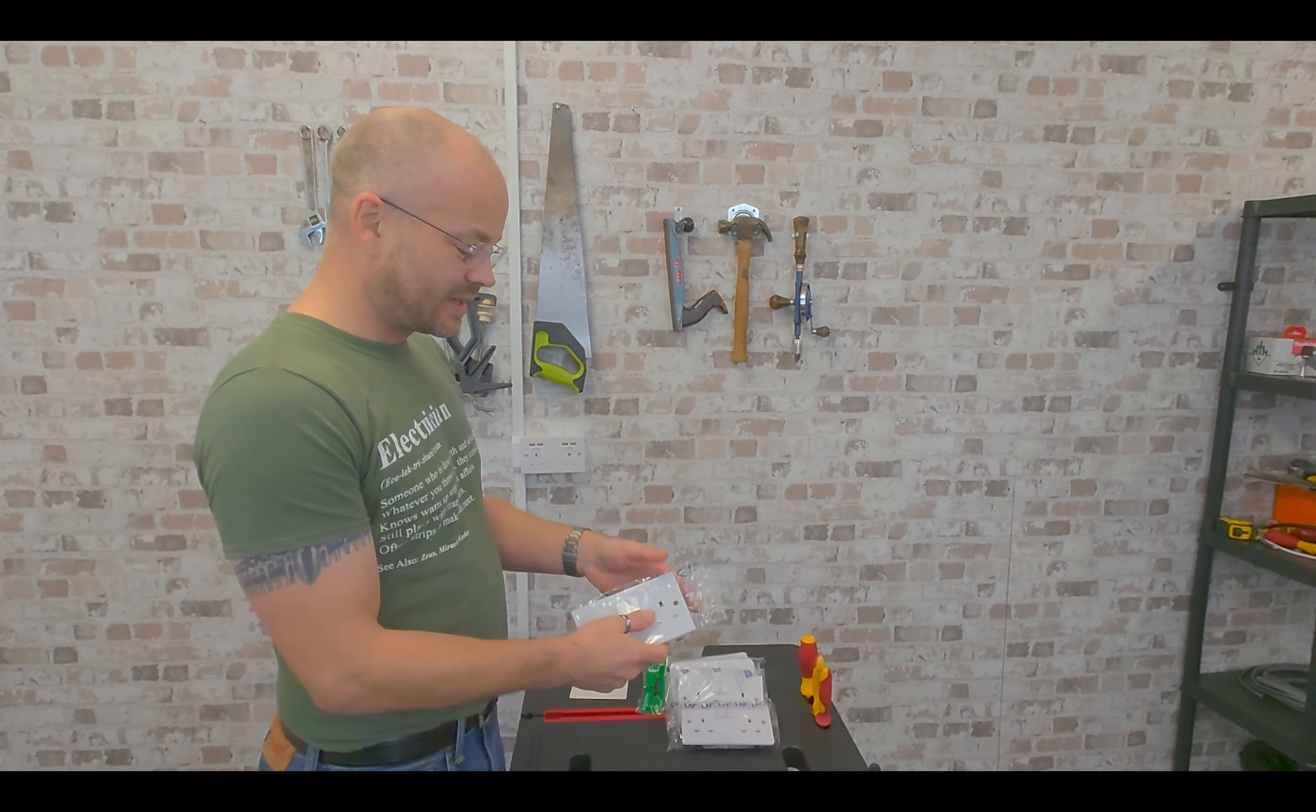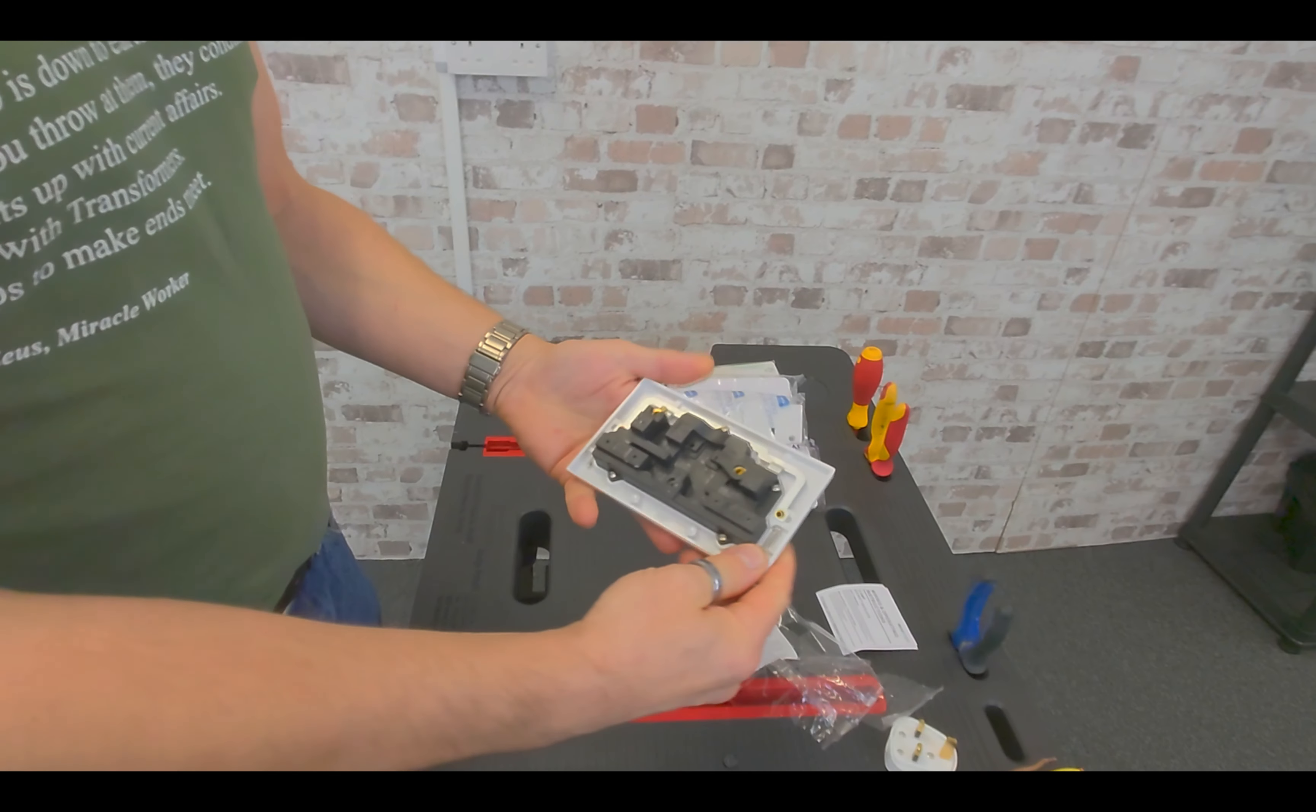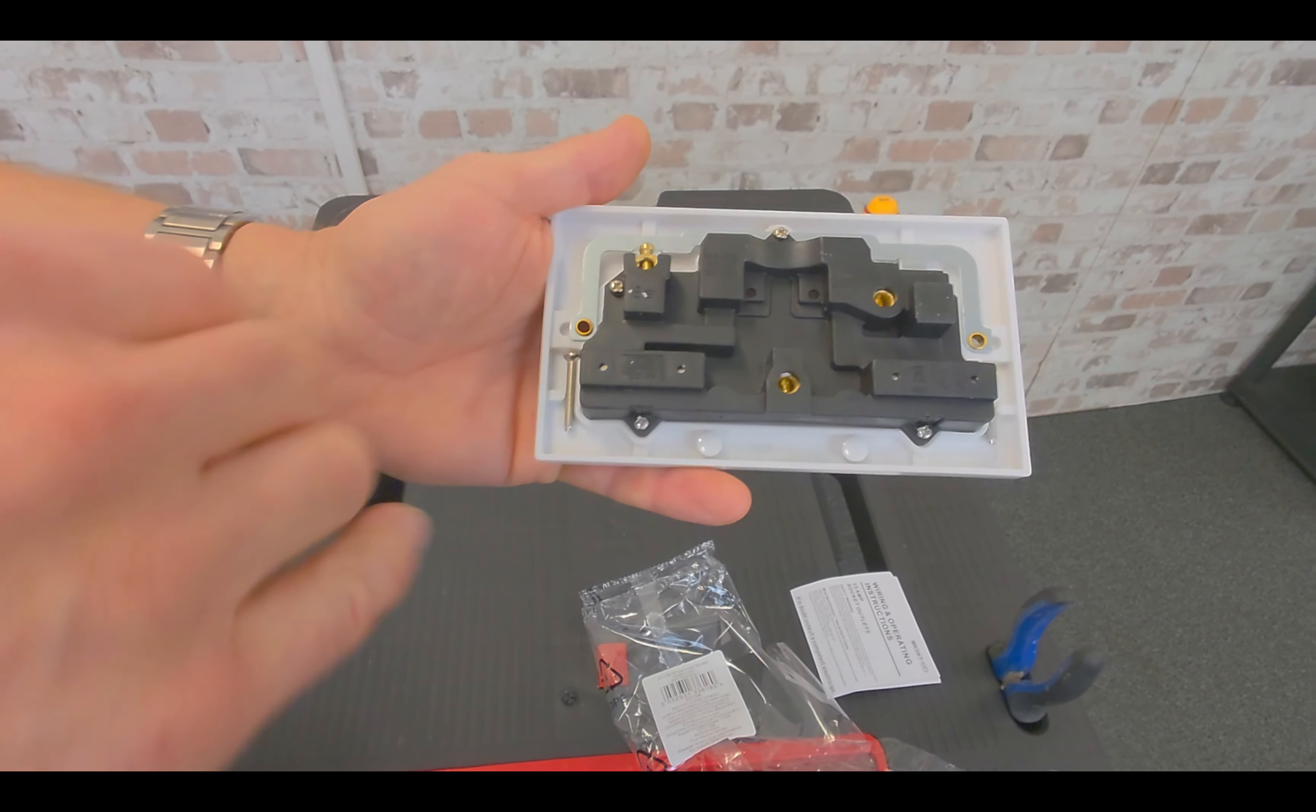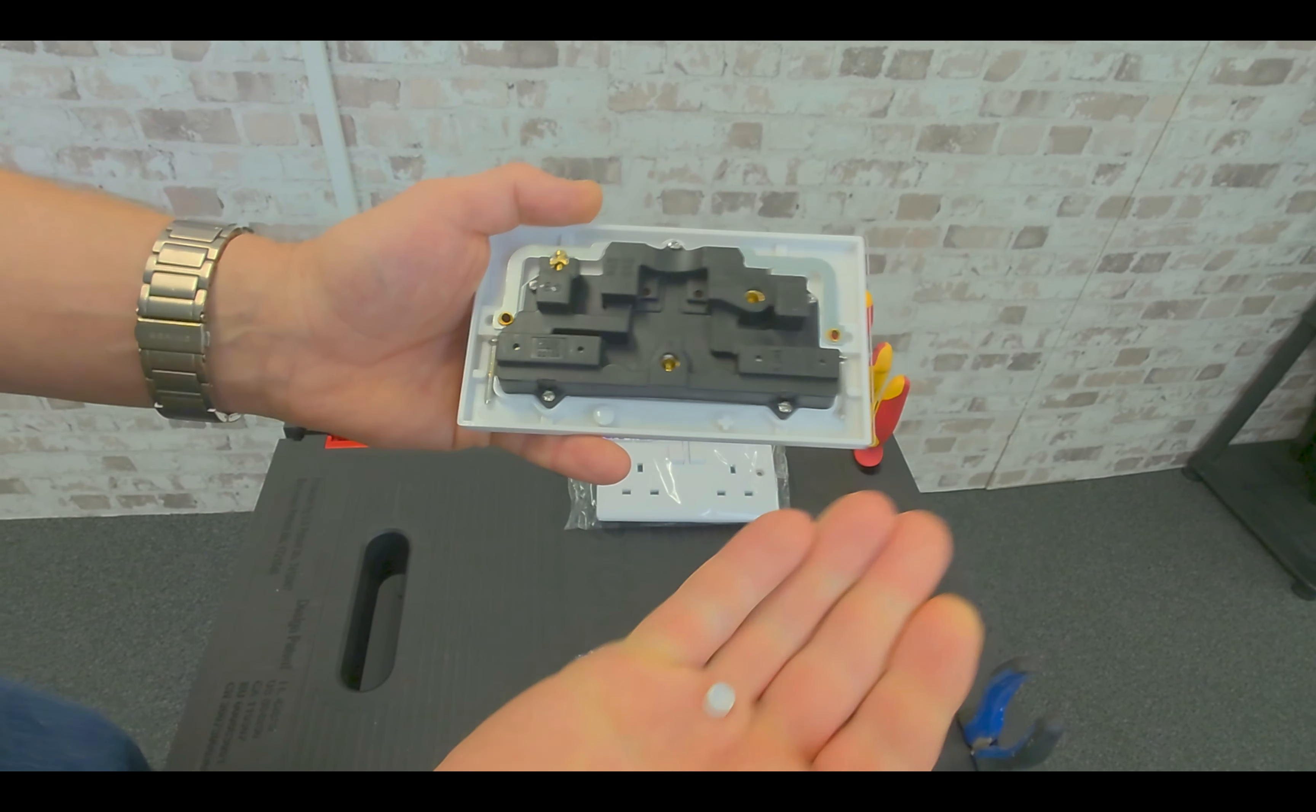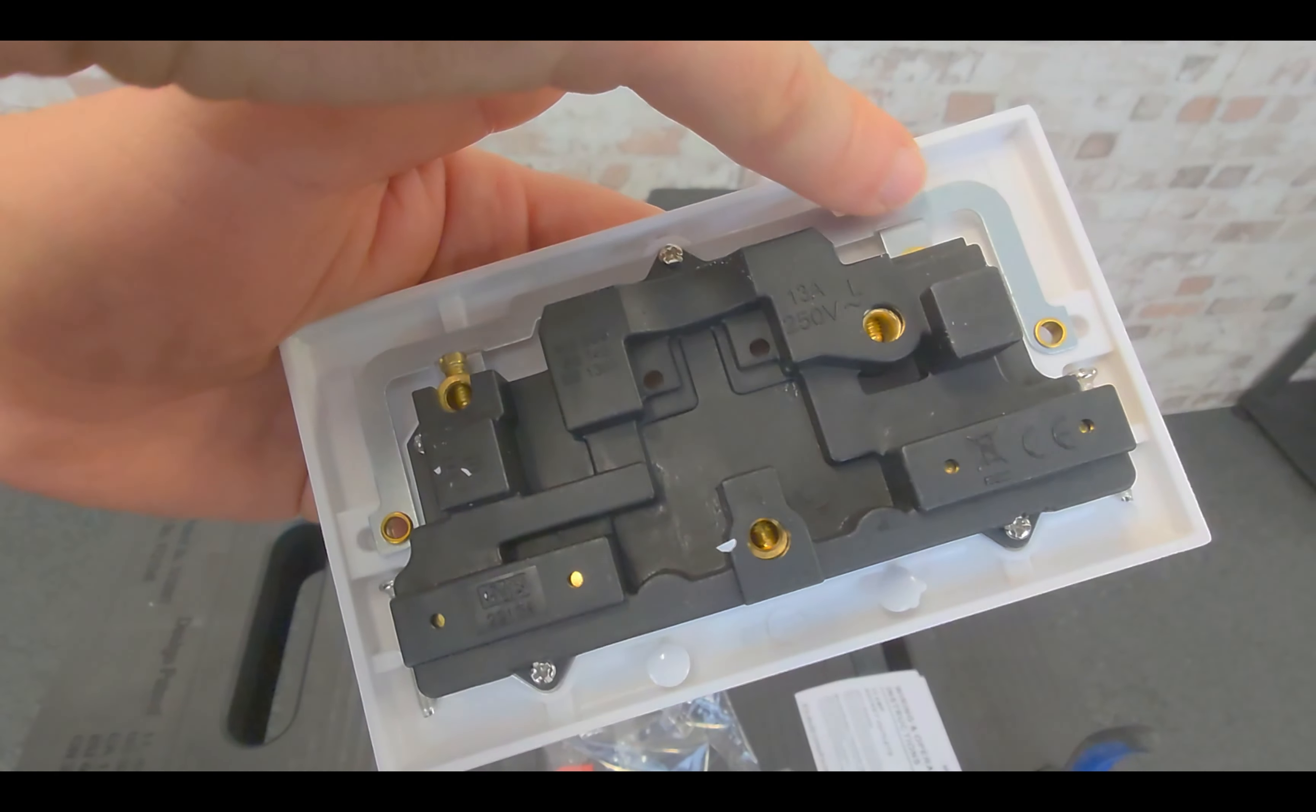So starting with the unbranded socket, you can tell straight away that packaging is also quite cheap. Let's get it open. We've got wiring instructions. Now as you can see, it's all very basic on the back. Even the plastic on the back looks quite cheap. There's no real branding on it. Now you can see here the screws are relatively short in comparison to most screws that are used for fixing these onto the walls. It has got the screw caps, which is good. But one thing notably straight away I can see is that it only has one earth, one earthing point. A lot of double sockets will usually have two, one on either side.